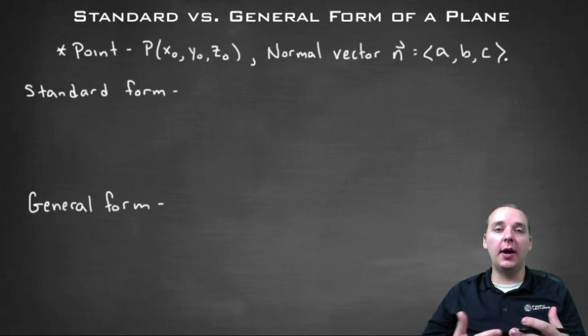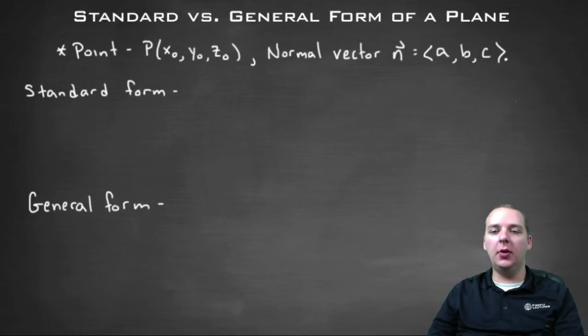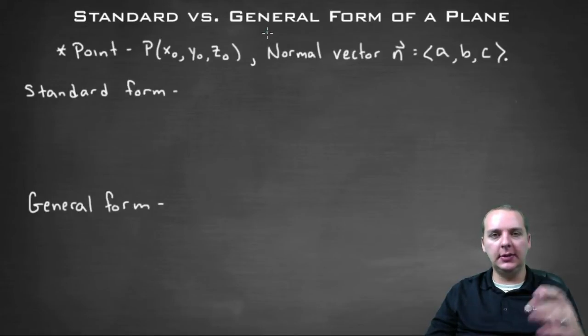There are two common ways that you can write the equation of a plane in space. One way is using something called standard form, and another way is what's called general form. We're going to break down the two different ways here in this video.